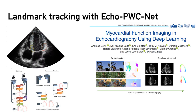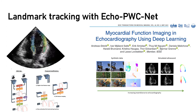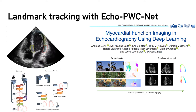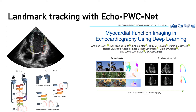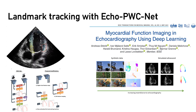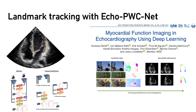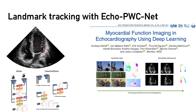For the tracking of the annulus landmarks, we used our previously published method called EchoPVCNet, developed by my colleague Andreas Östvik. This is an optical flow-type network which takes two images as input and predicts a displacement map. The displacement map can then be used to follow landmarks in the image frame by frame. This network was trained with both synthetic and simulated ultrasound data, and has been evaluated for strain measurements.